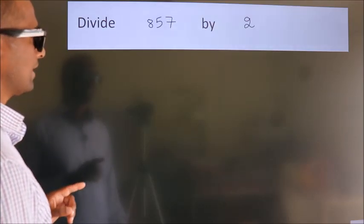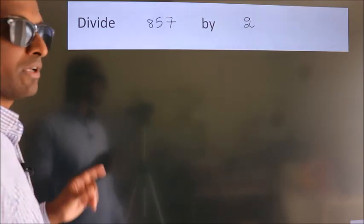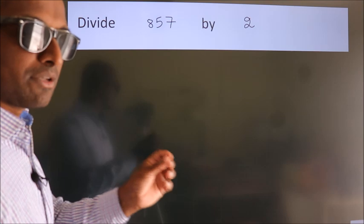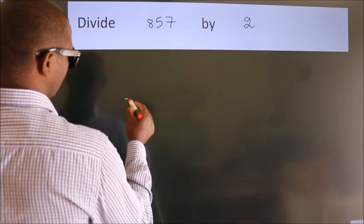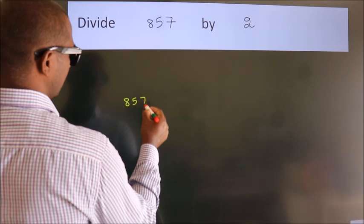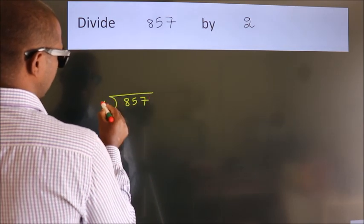Divide 857 by 2. To do this division, we should frame it in this way. 857 here, 2 here.